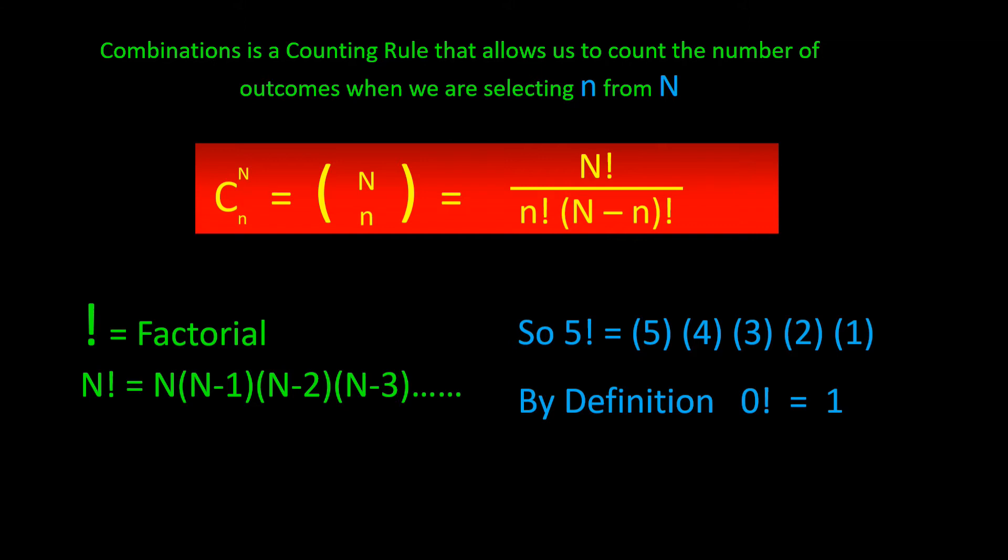A hundred factorial would be a hundred times ninety-nine times ninety-eight times ninety-seven until you get down to one. Now you might ask, what is zero factorial? And the answer is, by definition, zero factorial is one.